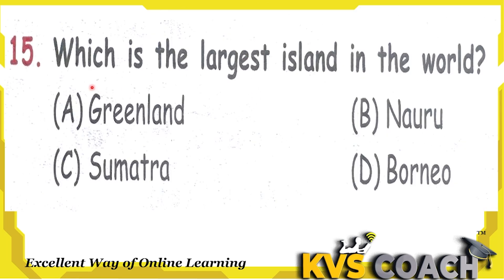Next question: which is the largest island in the world? Option A, Greenland — yes, it is the largest island of the world. Option B, Nauru — this is a tiny island. Option C, Sumatra — this is the largest Indonesian island, not of the world. Option D, Borneo — a giant rugged island of Southeast Asia, but not the largest in the world. So the right answer is Greenland, option A.